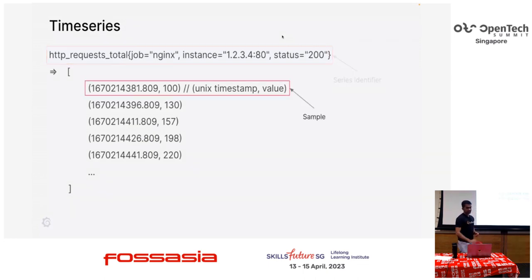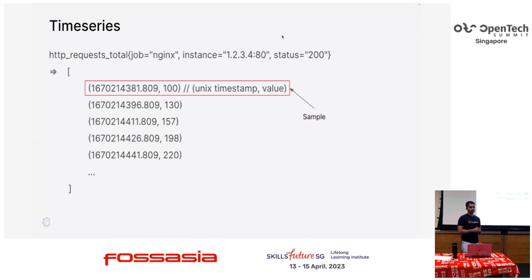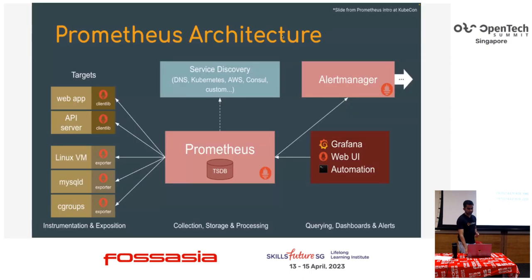Along with an identifier, a time series is just a stream of samples. A sample is a tuple of timestamp and a value. We use Unix timestamp and the value can be a float. That's the basis of a time series which we are going to store in the TSDB.